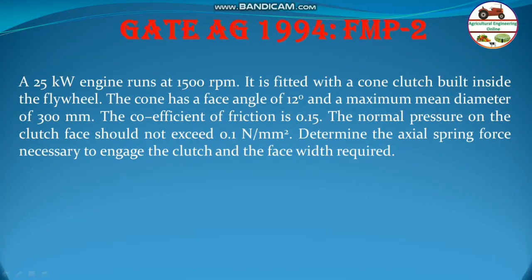Let us solve a problem from GATE 1994, from the Friction and Power section. The question states: a 25 kW engine runs at 1500 rpm and is fitted with a cone clutch built inside the flywheel. The cone has a face angle of 12 degrees and a maximum mean diameter of 300 mm. The coefficient of friction is 0.15 and the normal pressure on the clutch face should not exceed 0.1 N per mm square. Determine the axial spring force necessary to engage the clutch and the face width required.